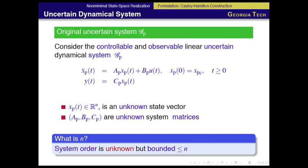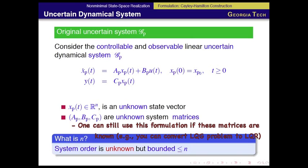Here I have the system Ap, Bp, Cp. The system state xp is unknown, as are the control and system output. These system matrices are unknown. Also, system order is unknown, but I'm going to assume that it is bounded, upper-bounded by n.